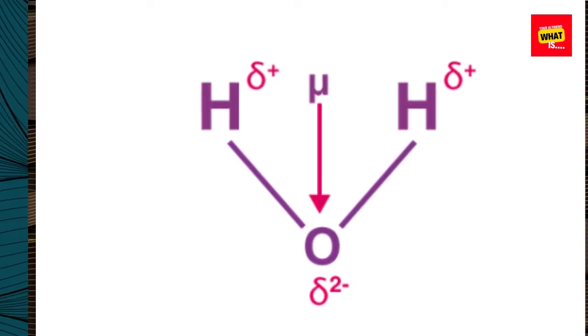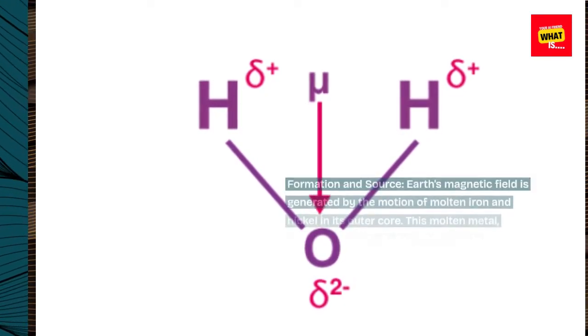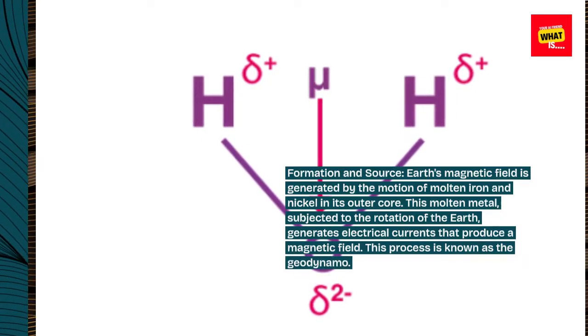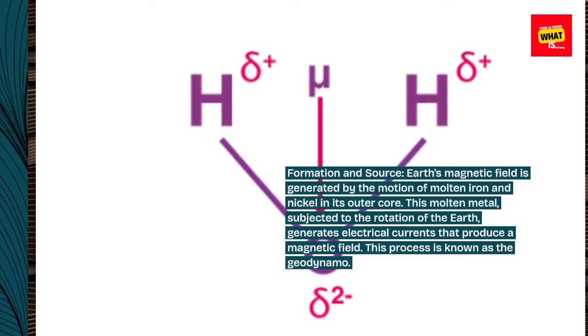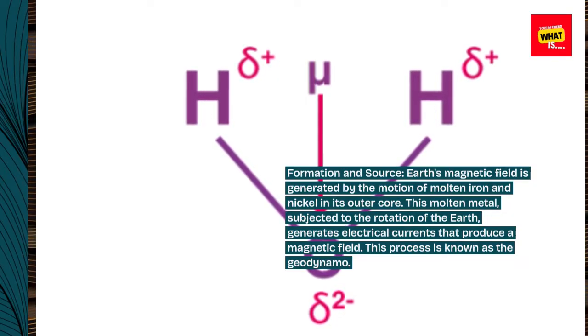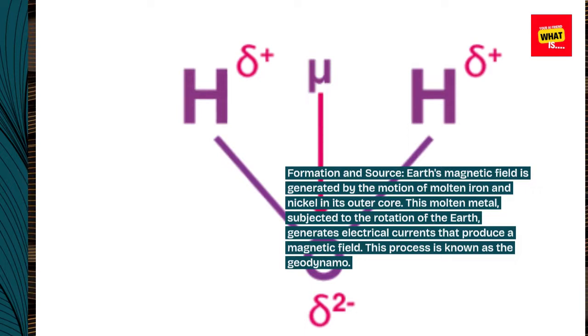Formation and Source: Earth's magnetic field is generated by the motion of molten iron and nickel in its outer core. This molten metal, subjected to the rotation of the Earth, generates electrical currents that produce a magnetic field. This process is known as the geodynamo.